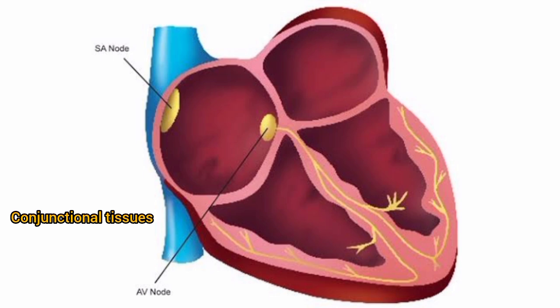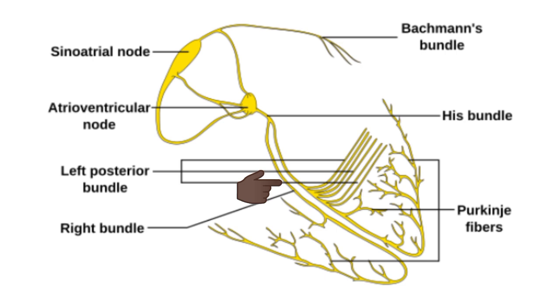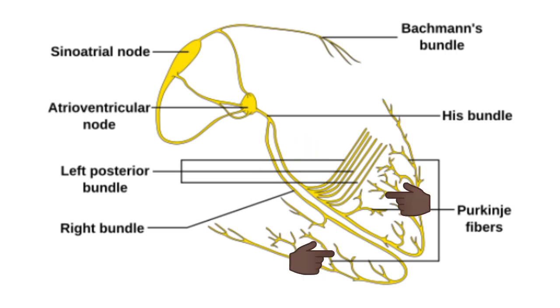The components of the conductive system in the human heart include the atrioventricular node, known as the AV node, the bundle of His, the right and left bundle branches, and the Purkinje fibers.